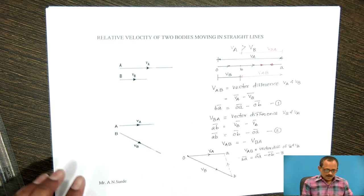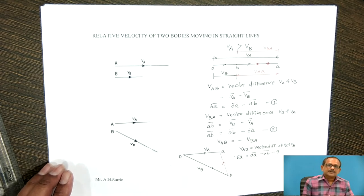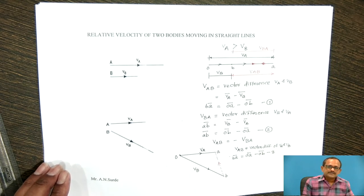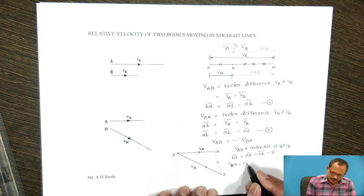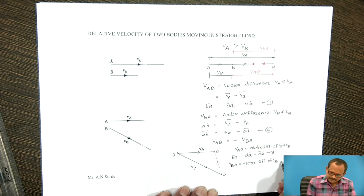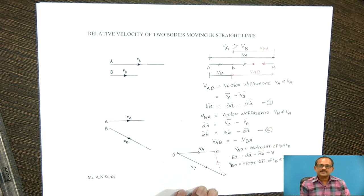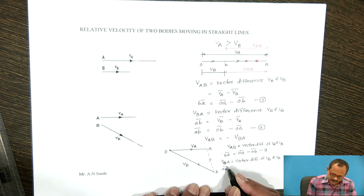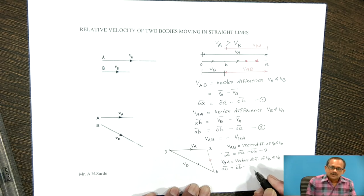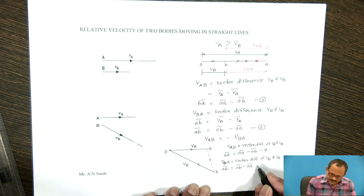Similarly, if I want to find out the relative velocity of B with respect to A, then VBA is equal to the vector difference of VB minus VA. That will be equal to vector AB = vector OB minus vector OA. This is equation number 4.